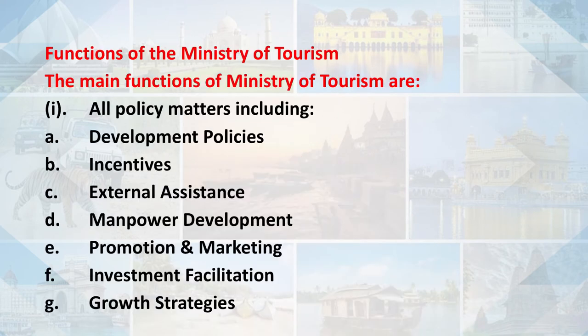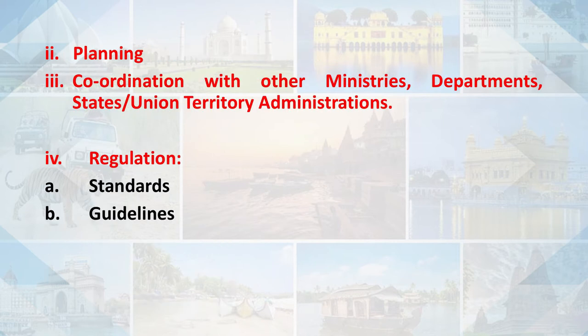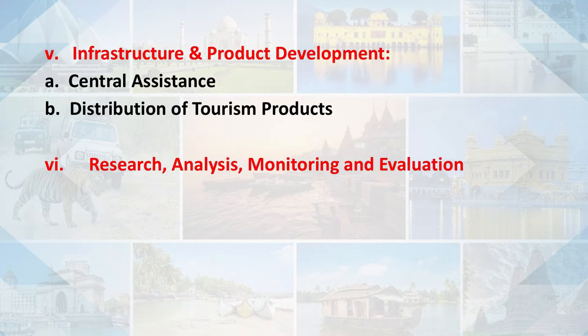The functions of the Ministry of Tourism can be categorized under policy matters, which include development policies, incentives, external assistance, manpower development, promotion and marketing, investment facilitation, and growth strategies. This also includes planning, coordination with other ministries, departments, states and union territory administrations, as well as regulation covering standards, guidelines, infrastructure, product development, central assistance, distribution of tourism products, research, analysis, monitoring, and evaluation.